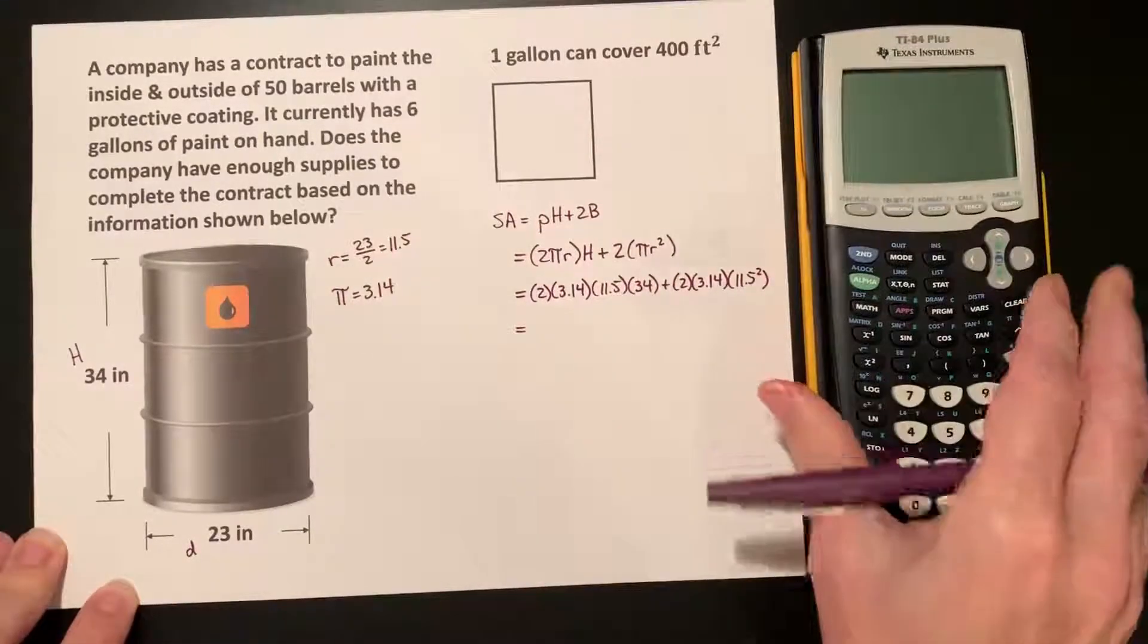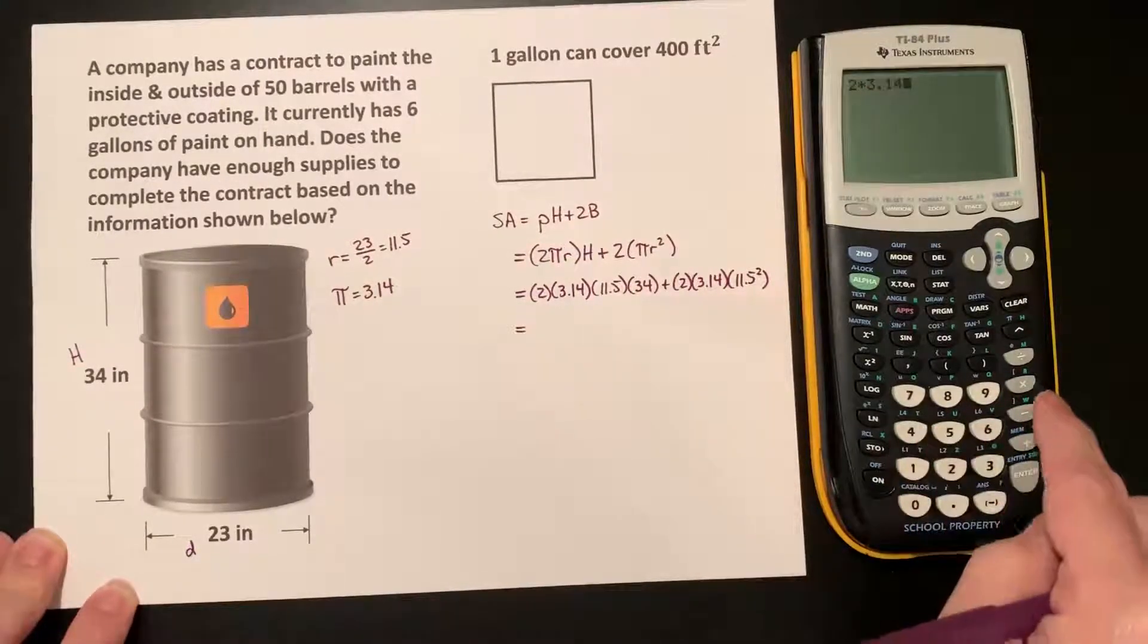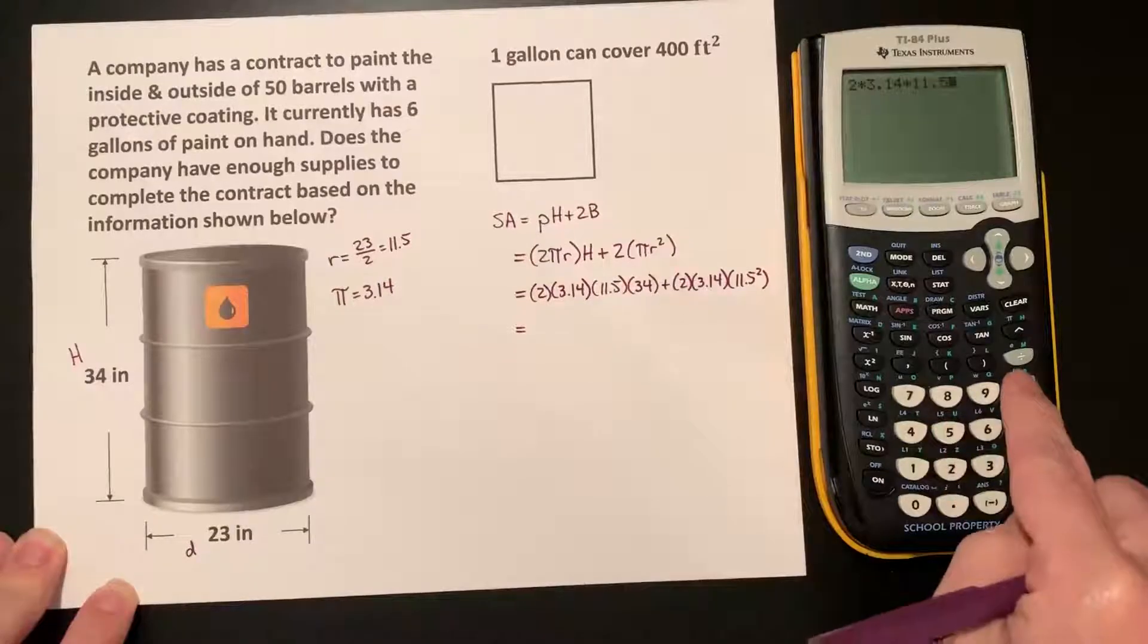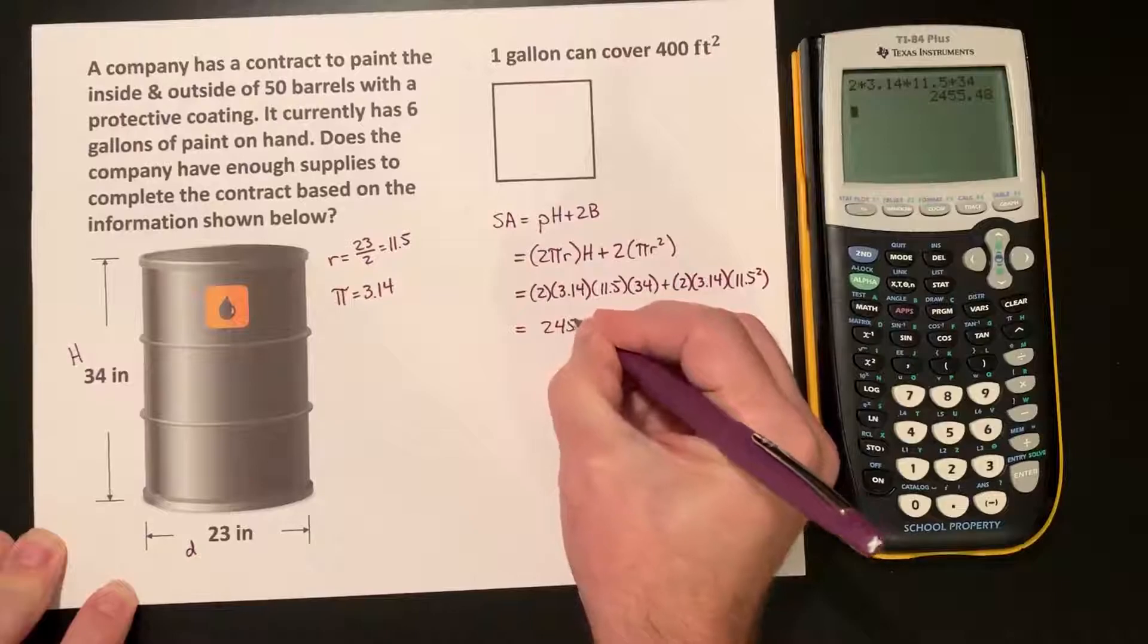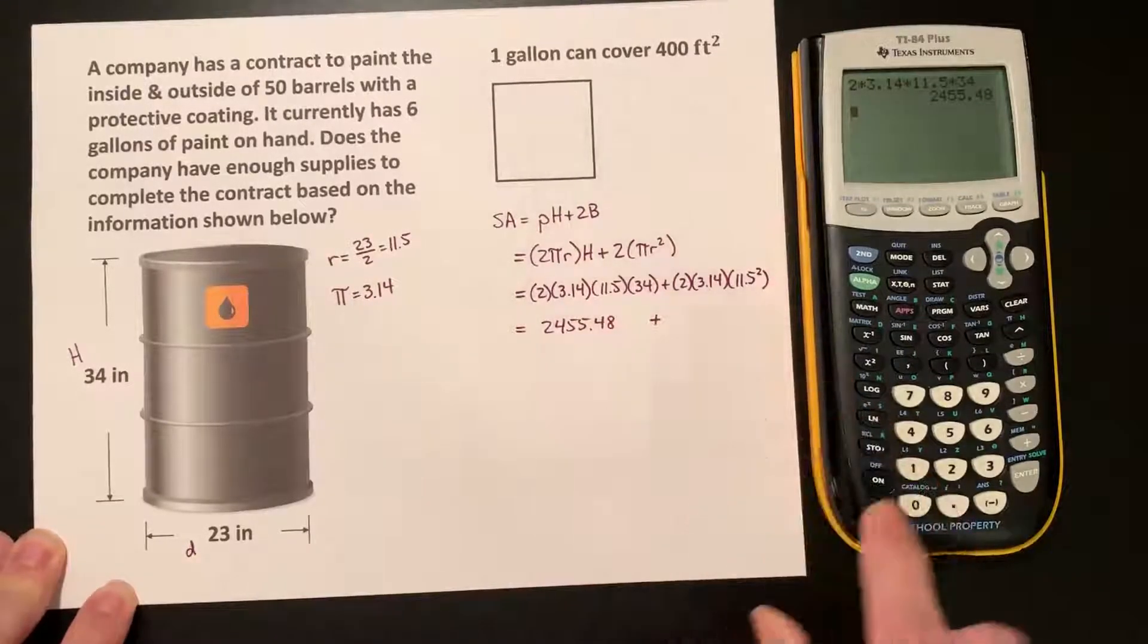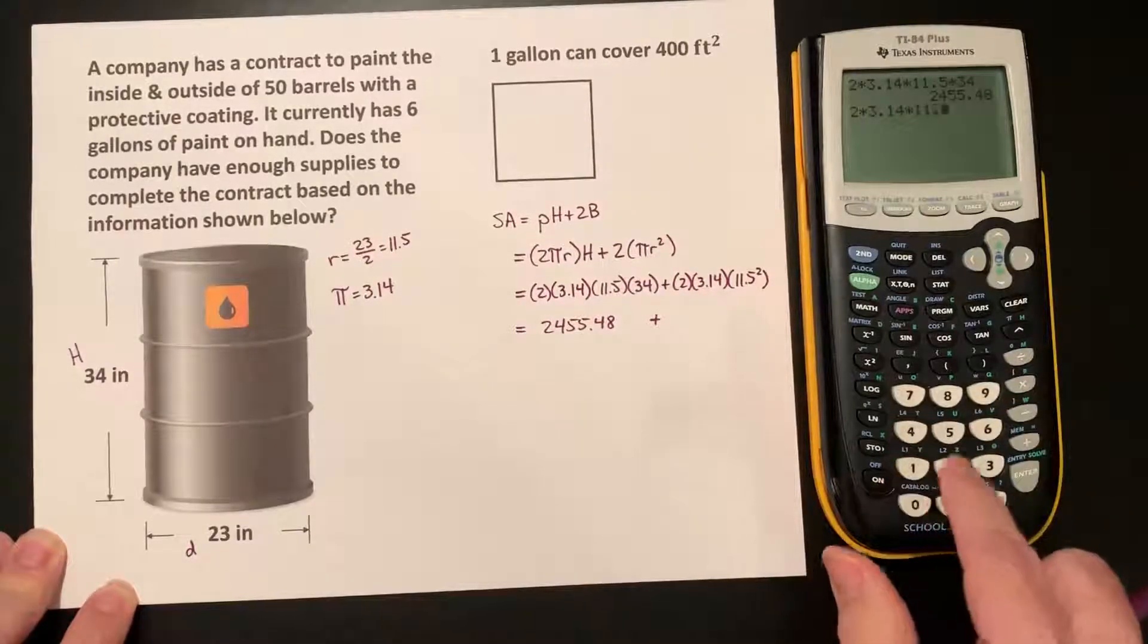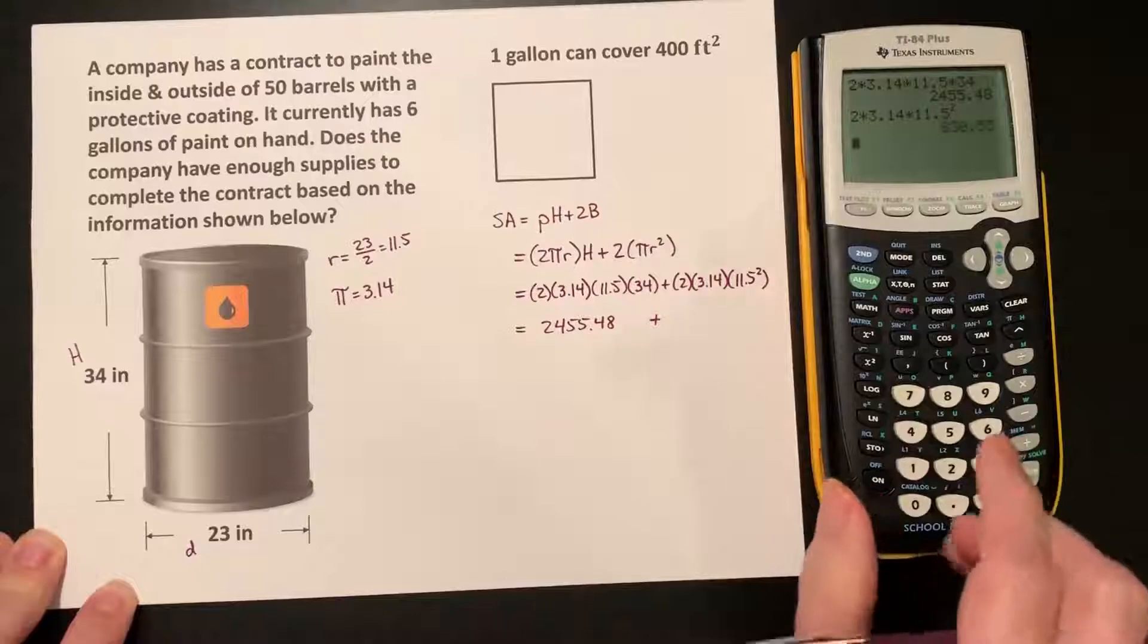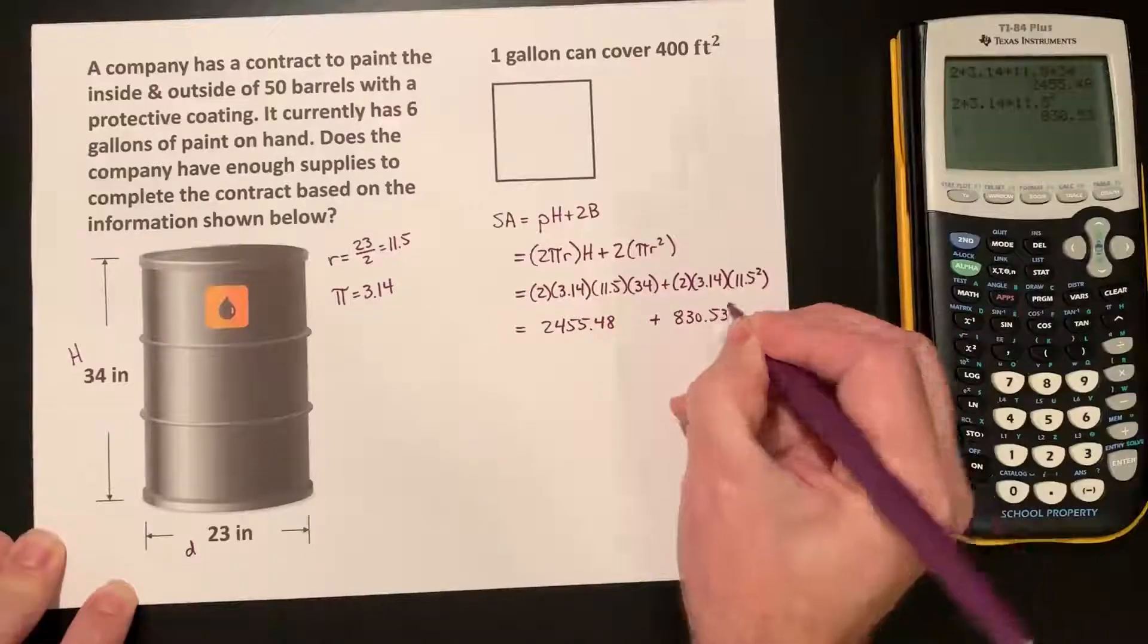And we'll type in these values, 2 times 3.14 times 11.5 times 34 is 2,455.48. And 2 times 3.14 times 11.5 squared is 830.53.